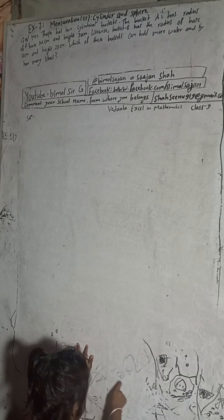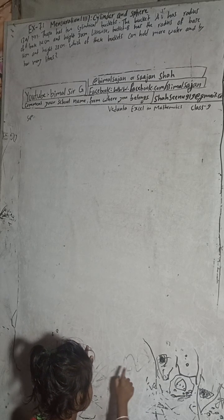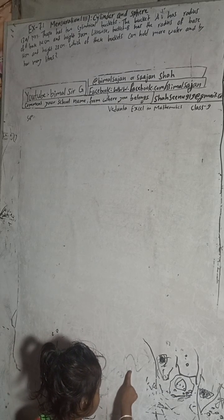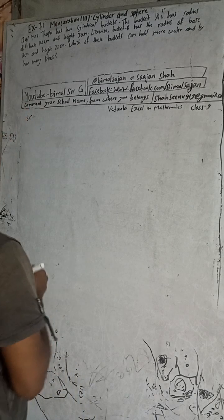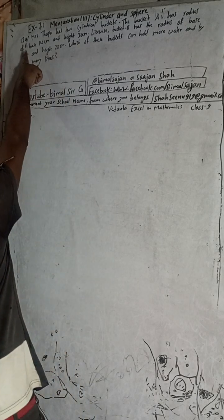Hi class 9 and 10 students, welcome back to Vimal Sarji YouTube channel. This is question number 13a, exercise 7.1, mensuration 3rd part — cylinder and sphere. Vedanta Excel in Mathematics, class 9. Check the playlist, you will get a lot of solutions for class 9 and 10. Now, question 13a.